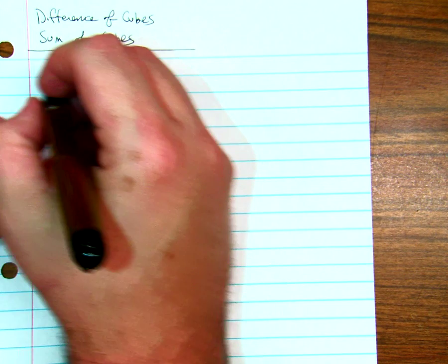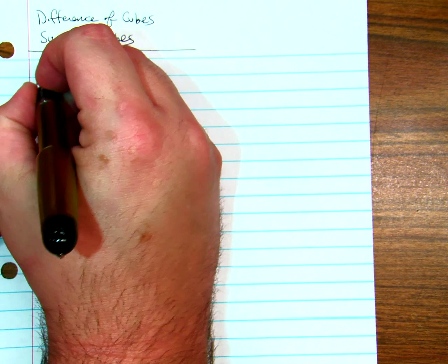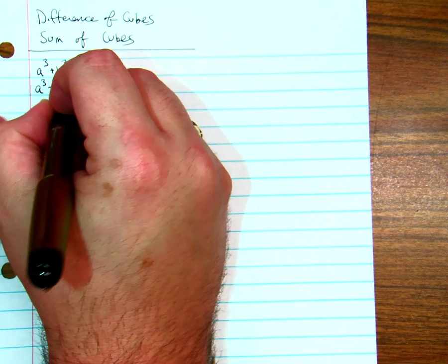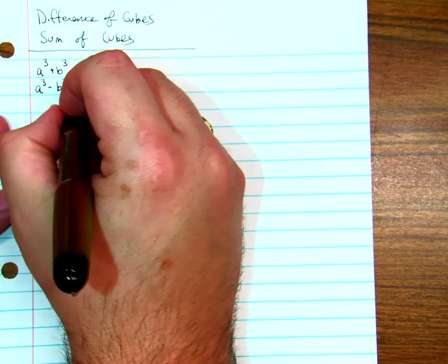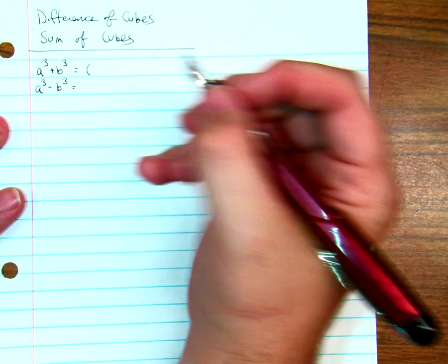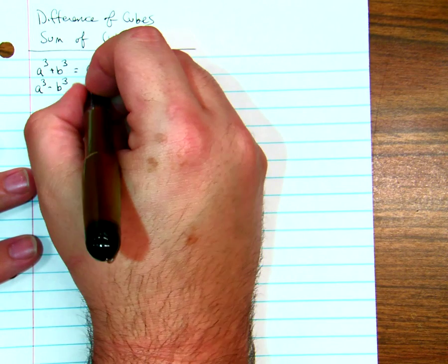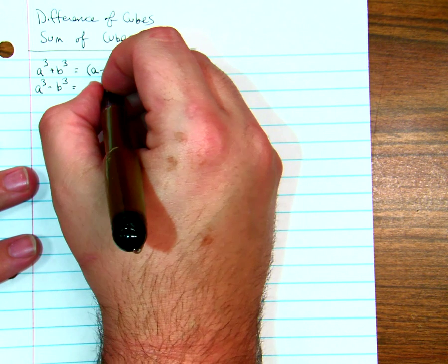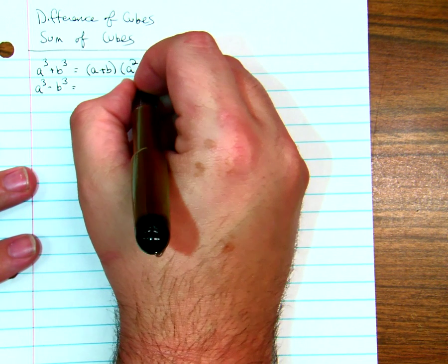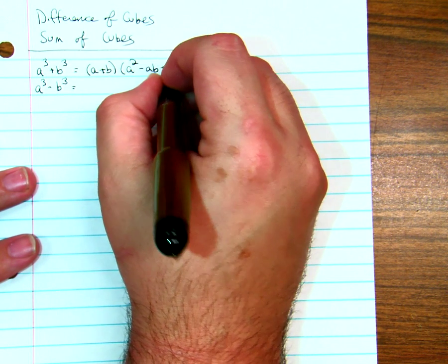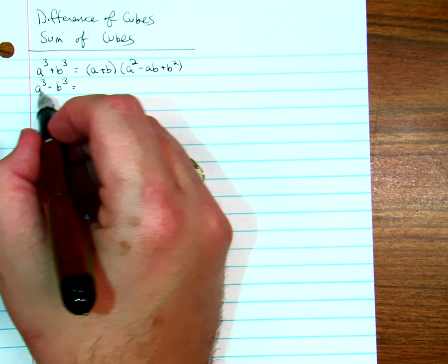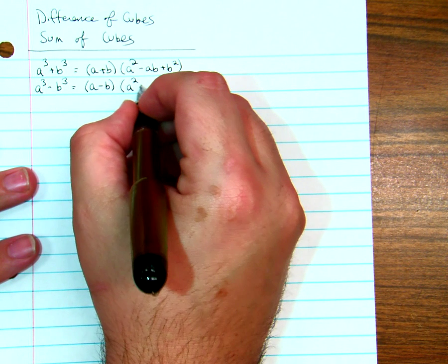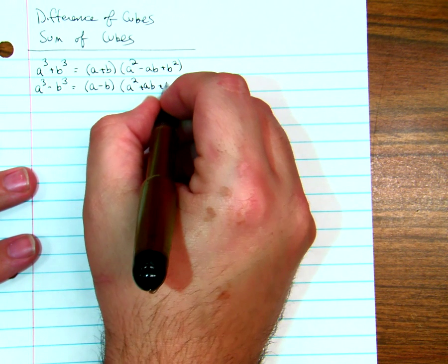This is going to come into the idea of a cubed plus b cubed and a cubed minus b cubed, and these are just formulas. If you have these situations, it's going to be a, the first one, if it's a cubed plus b cubed, it's a plus b times a squared minus ab plus b squared. If it's a cubed minus b cubed, you get a minus b, a squared plus ab plus b squared.